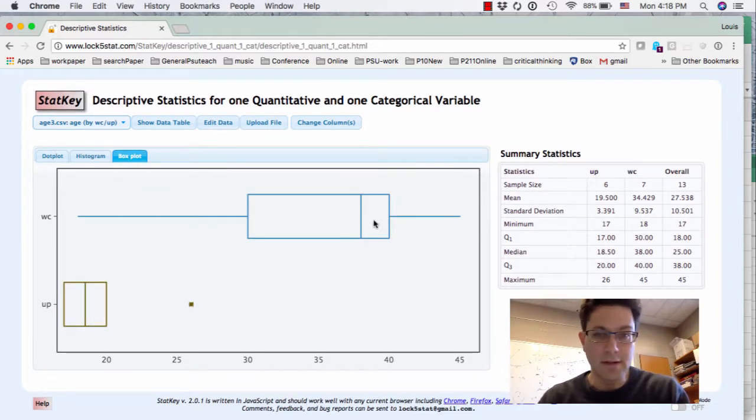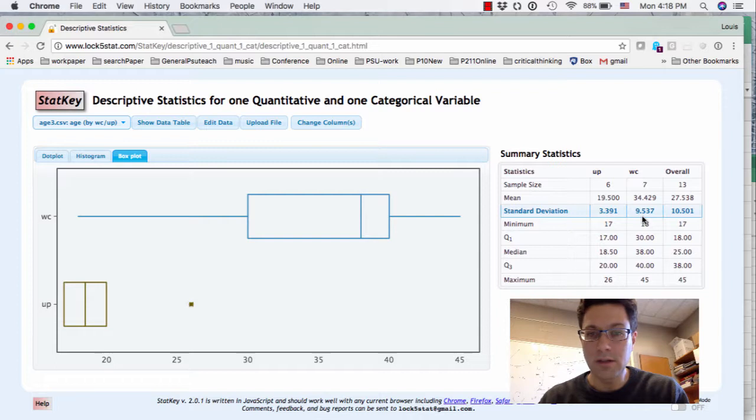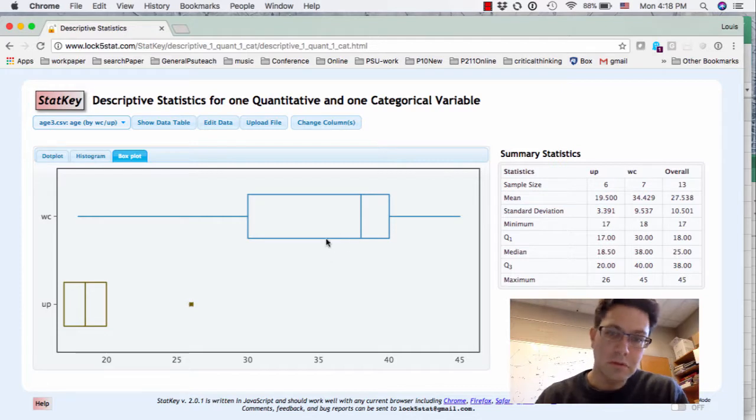First of all the World Campus doesn't have any outliers anymore. The World Campus has an age, a mean age of 34, and a standard deviation of 9, so it's a very spread out population of students. The mean is 34, it kind of makes sense, and the maximum is 45.